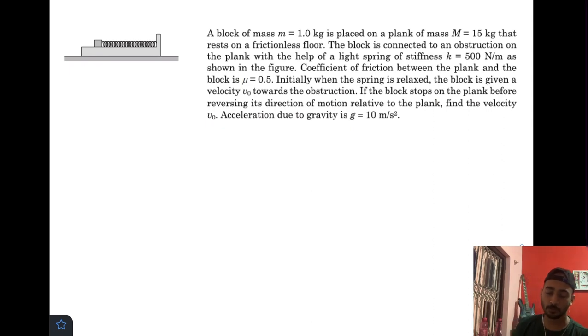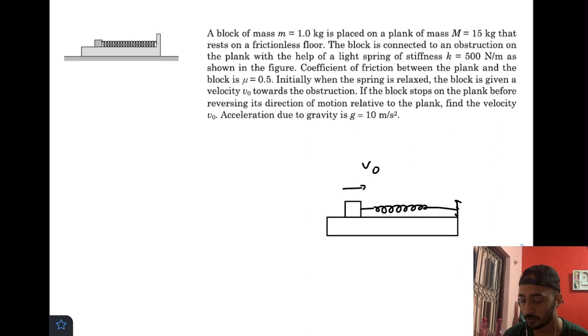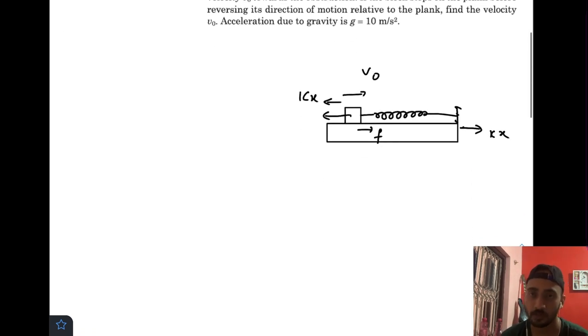We will start this problem by changing our frame of reference to the plank. Initially the block is given a velocity v₀. Whenever this block got a velocity v₀, a frictional force starts acting on the block towards left and equal amount of frictional force starts acting on the plank towards right. The spring starts getting compressed, so it also pushes the block towards left with force kx and it also pushes the plank towards right with force kx.